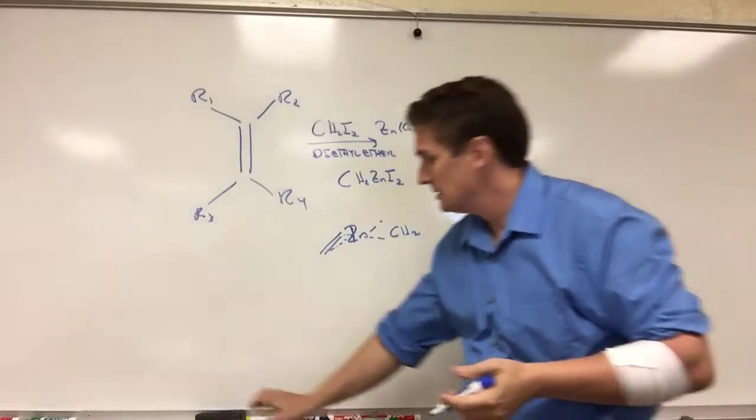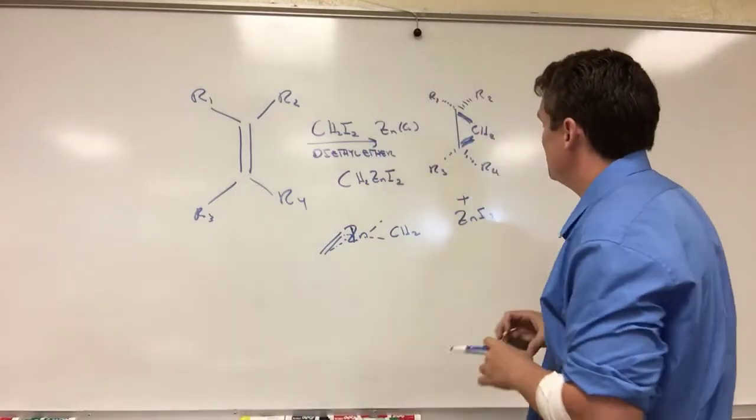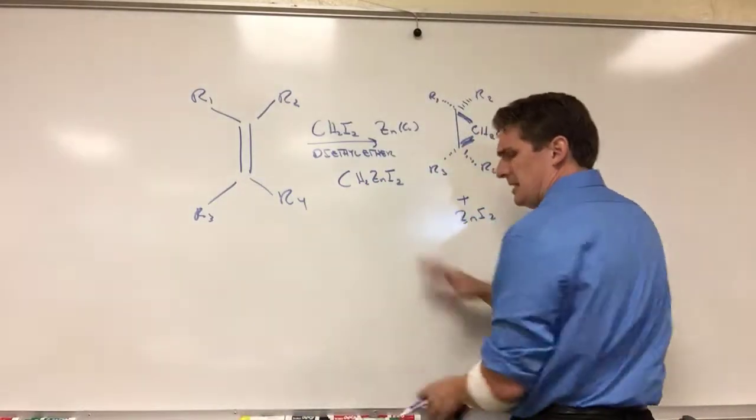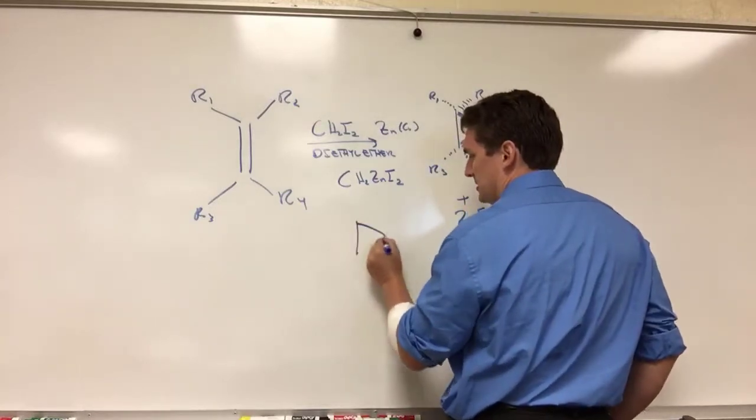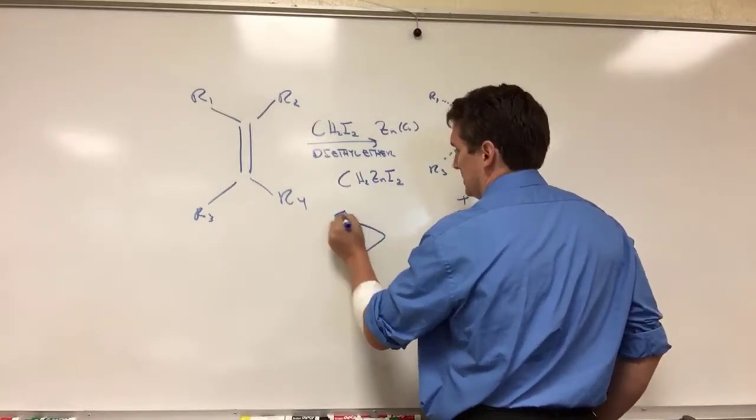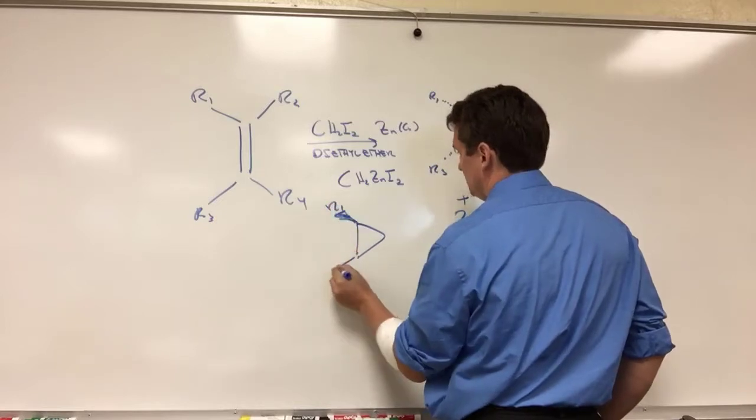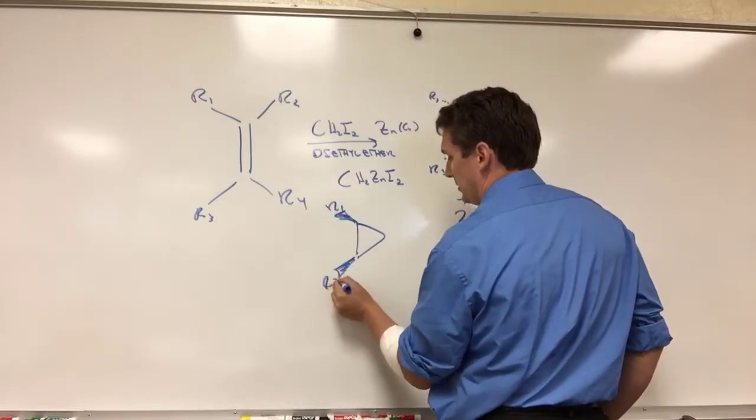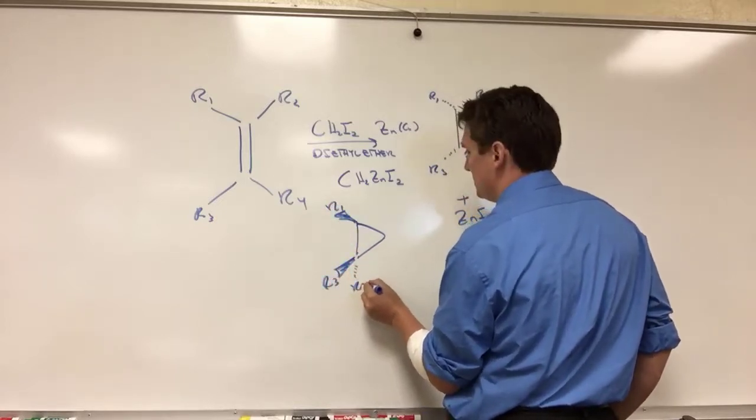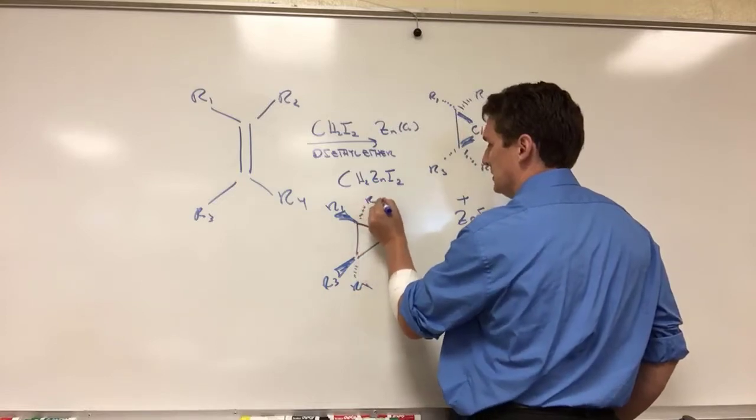Another way we could draw this, if we want to draw it with a CH2 group in plane, and I'll just put it down here so it's easier to see. We have our cyclopropane coming out of our board is our R1 and our R3, coming into the board, our R4 and R2.